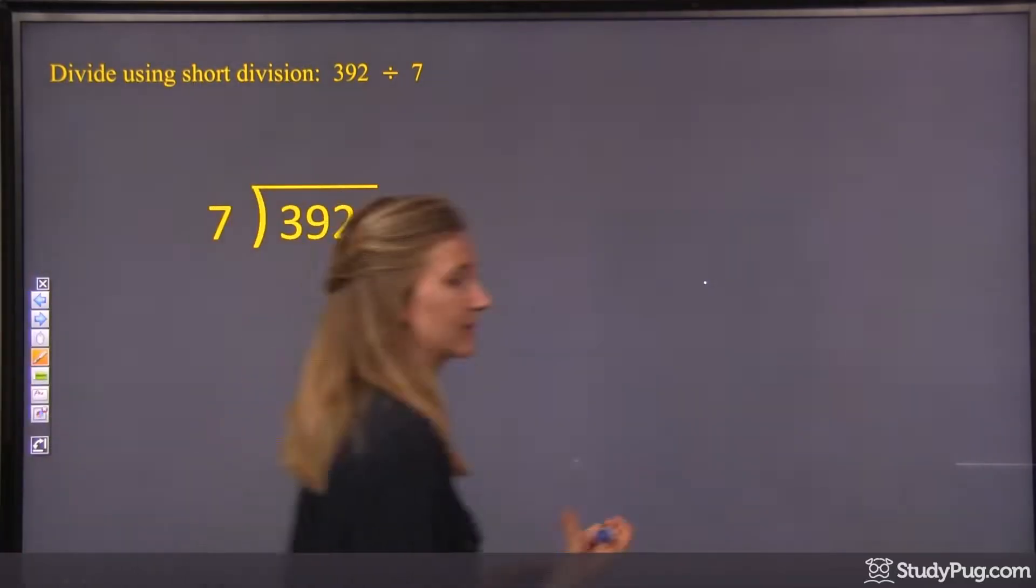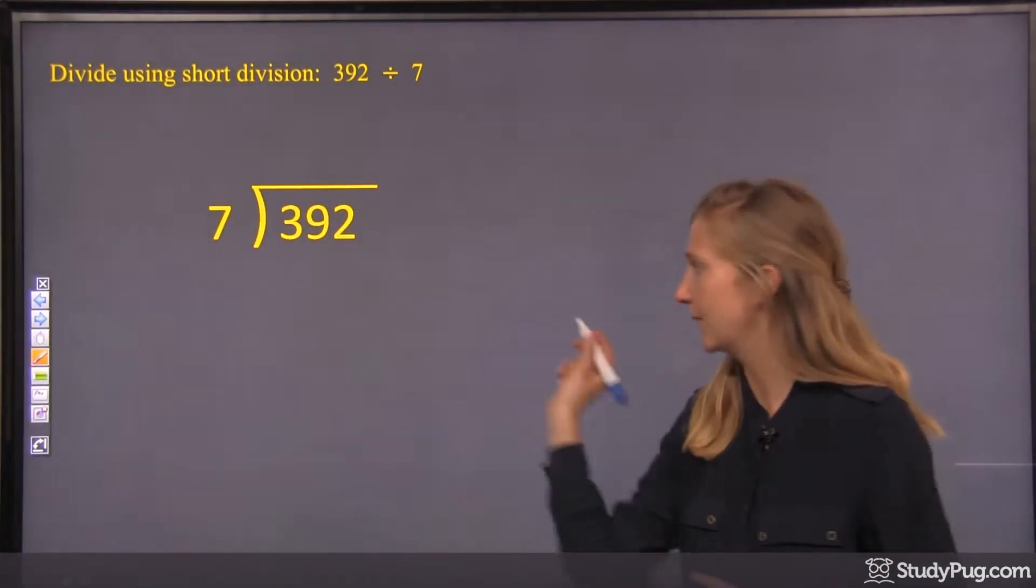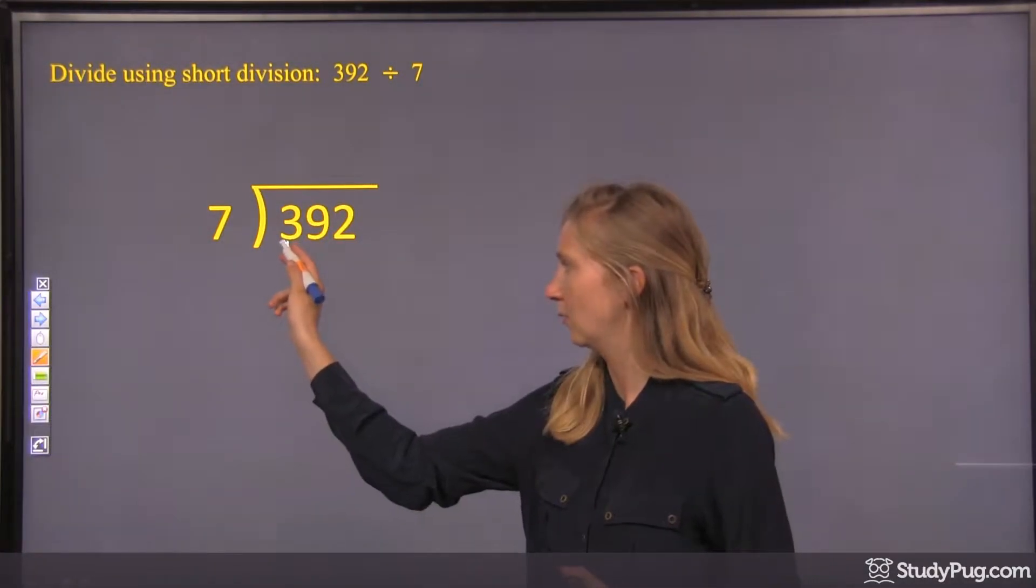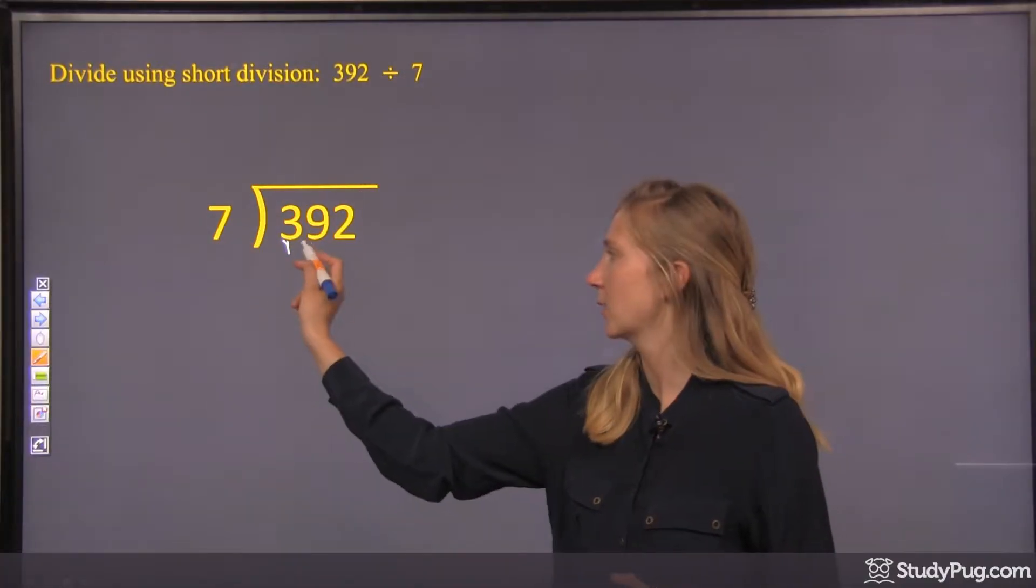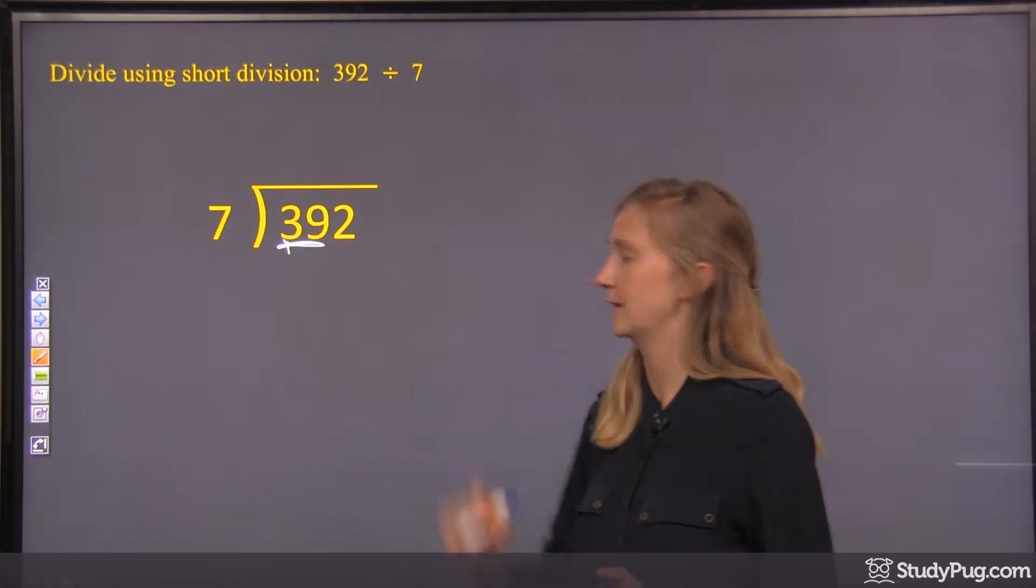Okay, so our first step of division, we look at the biggest place value. Well, that's a 3. 7 is bigger than a 3, so we're going to look at our first 2 place digits.